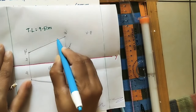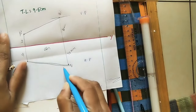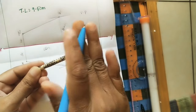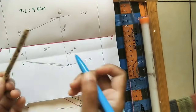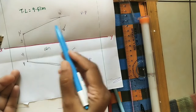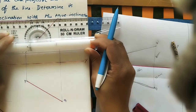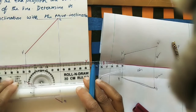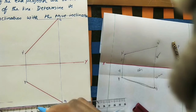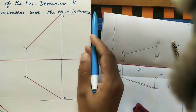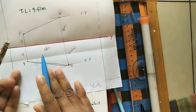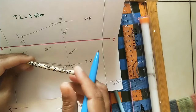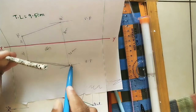After getting this rough diagram, draw the locus of Q point in the front view and the locus of Q point in the top view. This is because when we tilt this line, the Q point moves on the same plane — which looks like a line in both the front view and top view. At Q-dash, draw the horizontal locus of Q point, and similarly at small q, draw the locus of Q point.